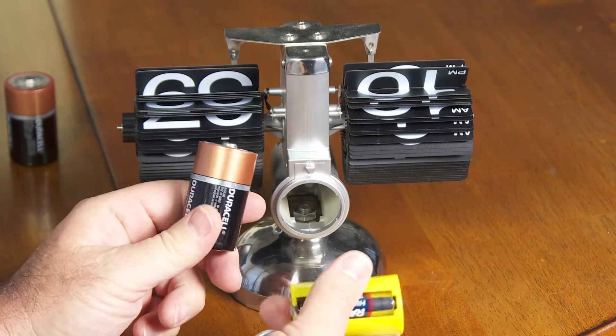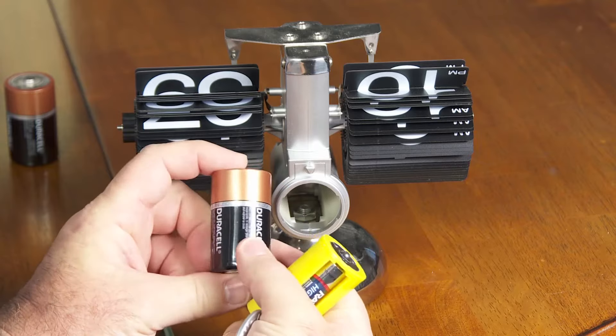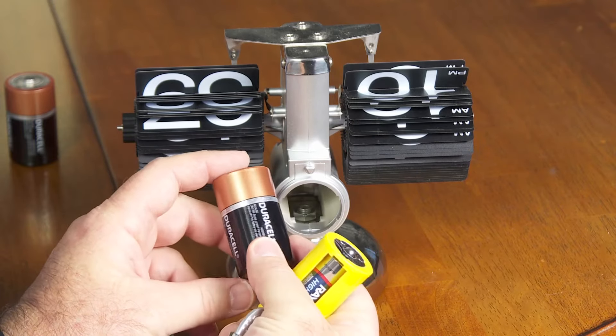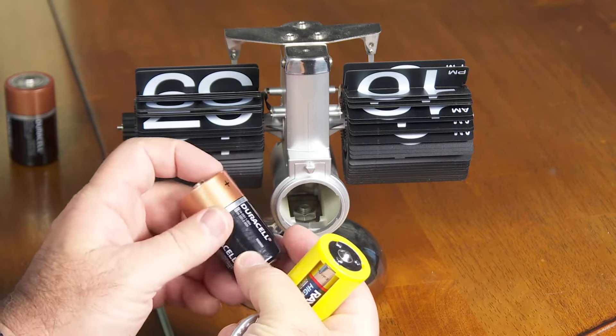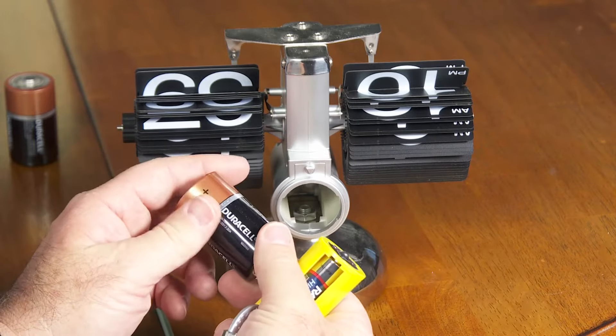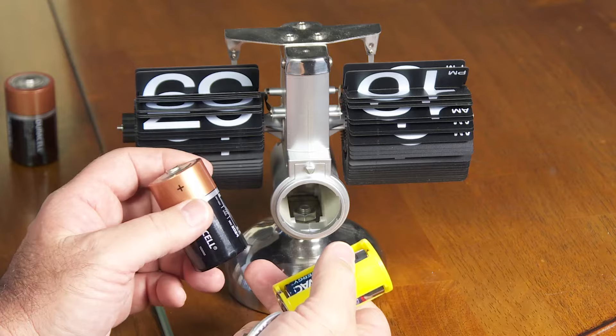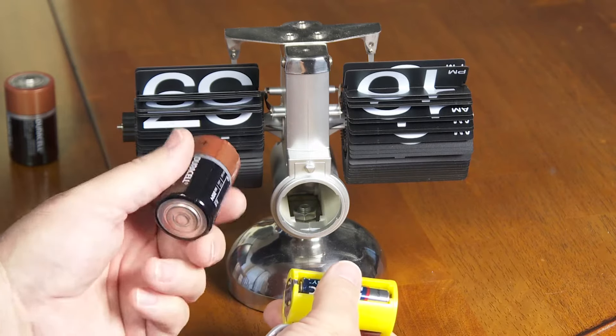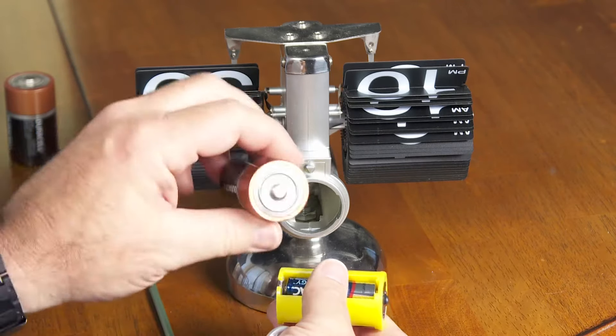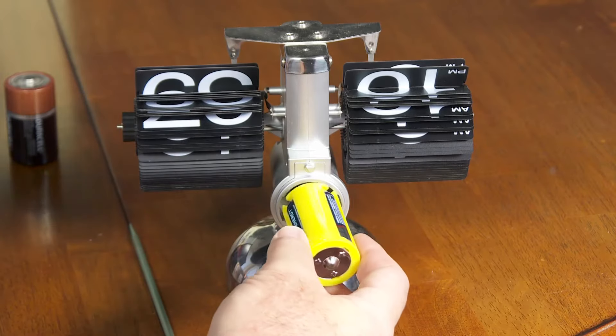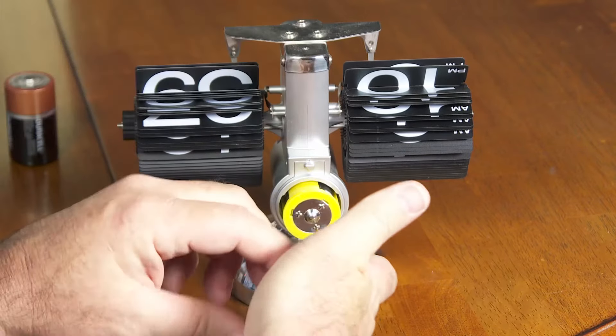So funny enough, the instructions that came with this said do not use alkaline batteries. It said to use carbon zinc batteries, or if you're going shopping, you might see them labeled as heavy duty batteries. And I don't know what difference that makes. I've gone ahead and used alkaline batteries here. So I don't know why the manufacturer says not to use them in this device.